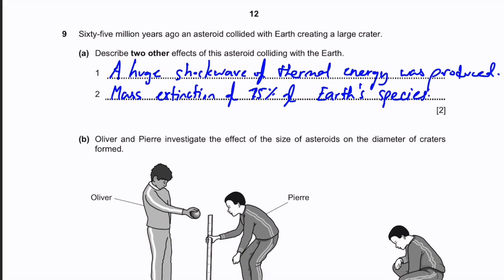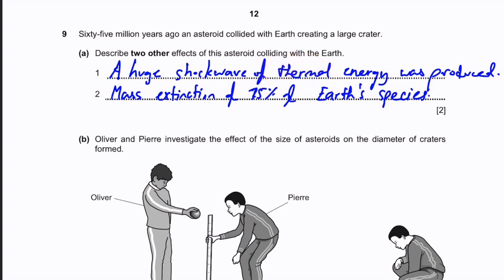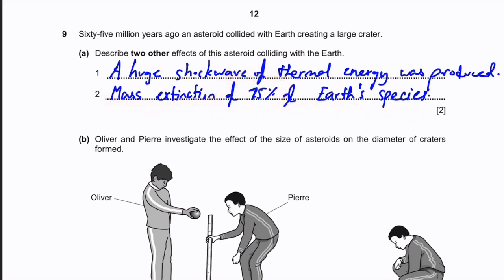Question 9. 65 million years ago, an asteroid collided with Earth, creating a large crater. Two other effects of this collision: first, a huge shockwave of thermal energy or radiation of thermal energy was produced; and second, there was a mass extinction of 75% of Earth's species that existed at the time.